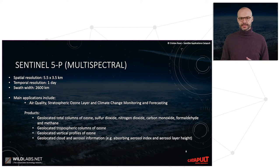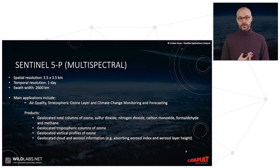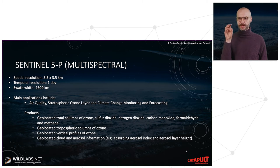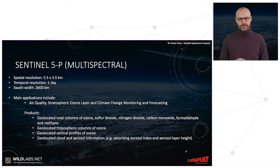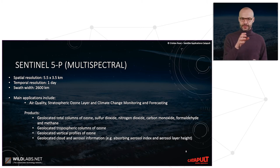Sentinel-5P is another multispectral mission used to derive atmospheric components — specifically ozone, sulfur dioxide, nitrogen dioxide, carbon monoxide, methane, and formaldehyde — relating to air quality generally. It is very widely used for climate change studies and forecasting, and products come directly as geolocated versions of those specific atmospheric components.